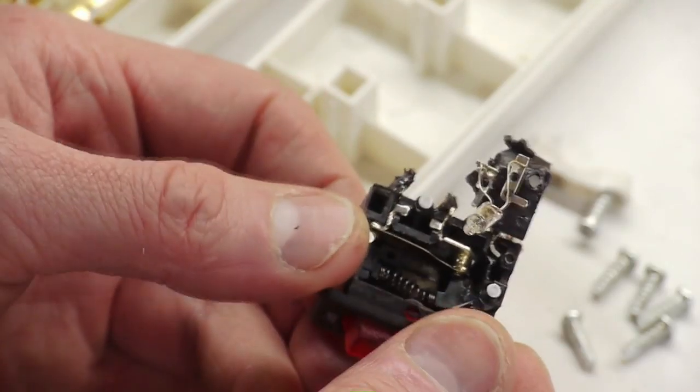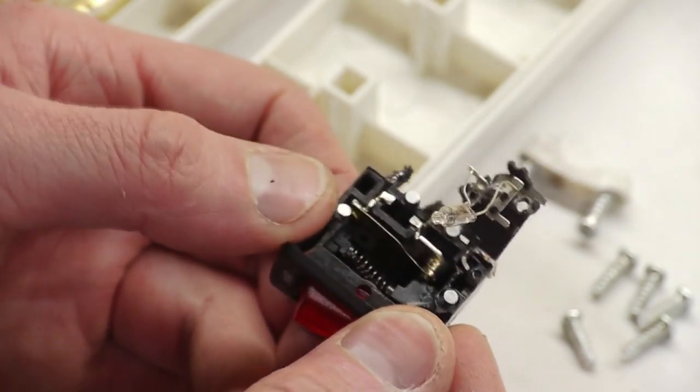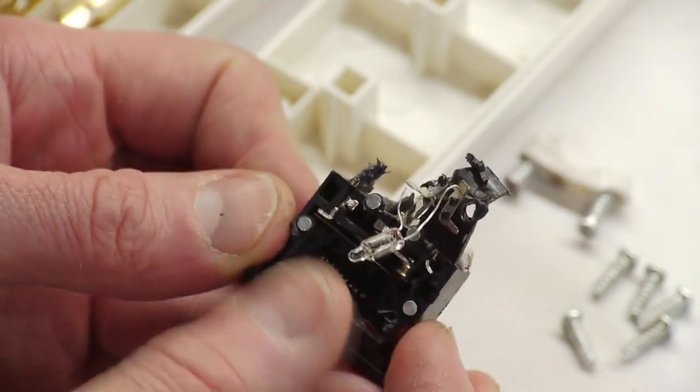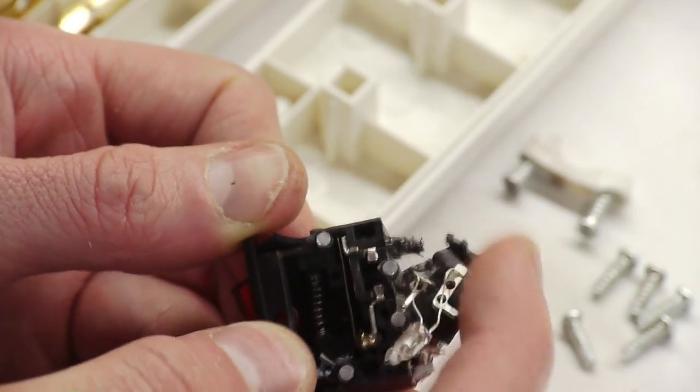So I carefully cut away the switch housing, and it looks like the contacts are okay. The neon bulb is intact, the connections on the neon bulb look okay.